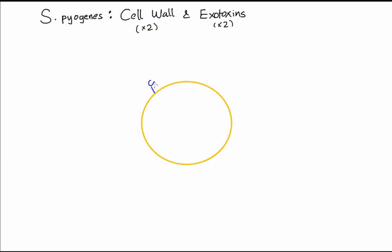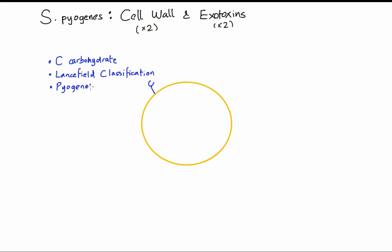The first cell wall component is called C carbohydrate, and I've drawn it in the shape of a C. This carbohydrate is antigenic and it's used for the Lancefield classification. The Lancefield classification is basically a way of classifying strep based on this C carbohydrate. The carbohydrate in strep pyogenes makes it a group A strep.